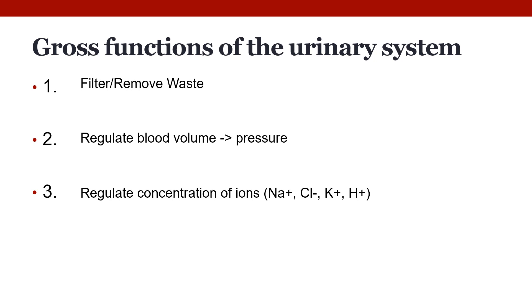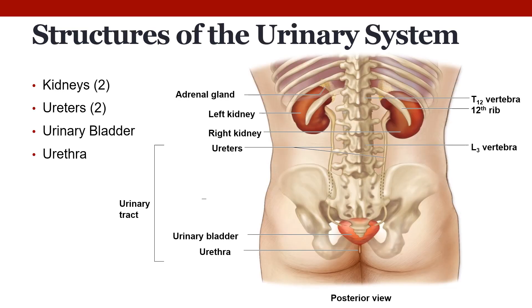The urinary system also controls levels of electrolytes or ions. It regulates ion concentrations, including electrolytes such as sodium, chloride, and potassium. Sodium concentration can be altered to help regulate osmolarity, while changing the amount of hydrogen ions will help regulate pH.